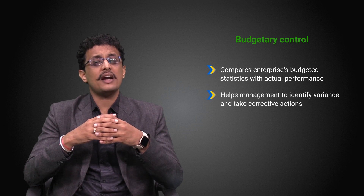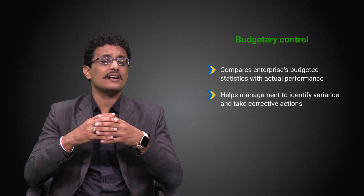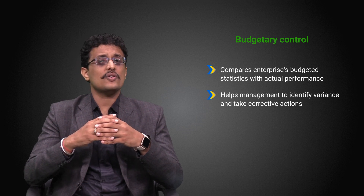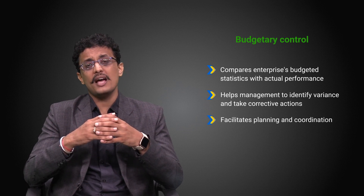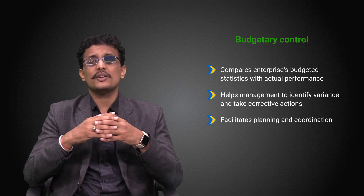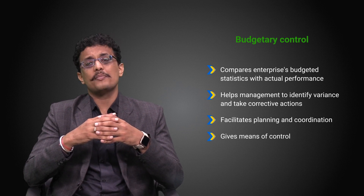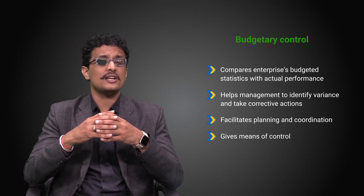Budgetary control compares the enterprise's budgeted statistics with its actual performance to calculate deviations. Following the preparation of budgets, actual results are recorded and compared with actual performance to calculate deviations. Comparing budget and actual statistics helps management identify variances and take corrective action. Budgetary control is an ongoing process that facilitates planning and coordination, and also gives a means of control. A budget is a method whereas budgetary control is the outcome.